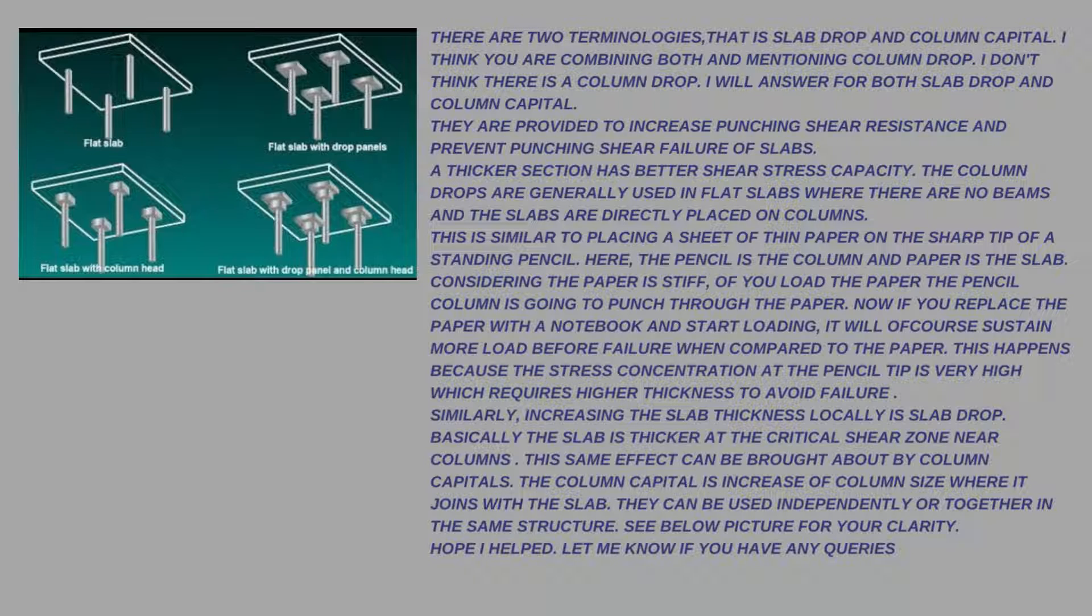They are provided to increase punching shear resistance and prevent punching shear failure of slabs. A thicker section has better shear stress capacity. The column drops are generally used in flat slabs where there are no beams and the slabs are directly placed on columns.